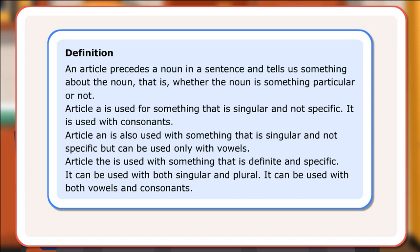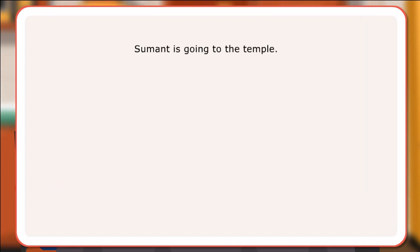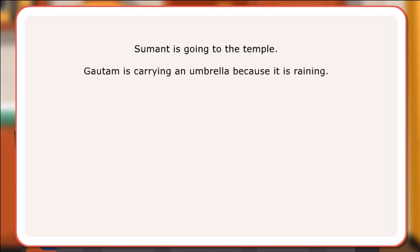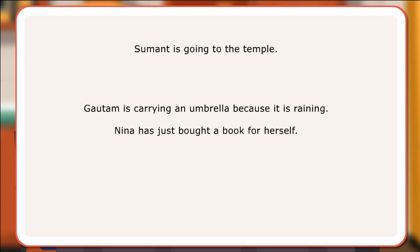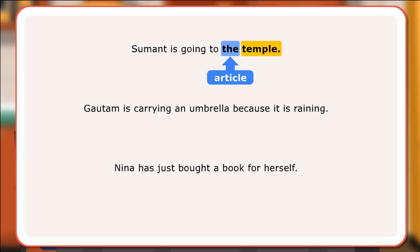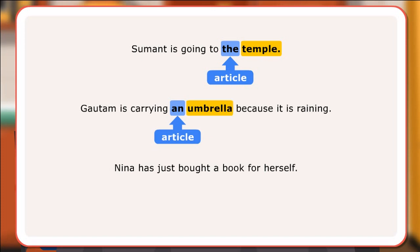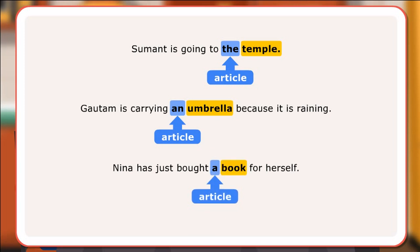Let us look at a few sentences. Sumanth is going to the temple. Gautam is carrying an umbrella because it is raining. Nina has just bought a book for herself. In the first sentence, 'the' is an article and refers to a particular temple. In the next sentence, 'an' is an article and refers to any single umbrella. In the third sentence, 'a' is an article and refers to a single book which is not specific.